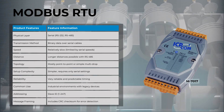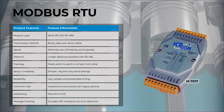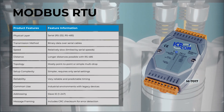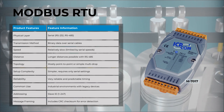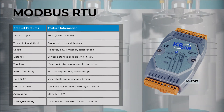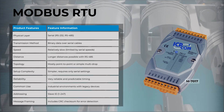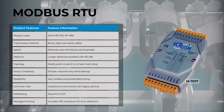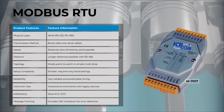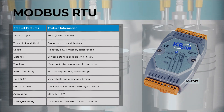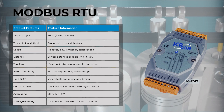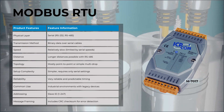The topology is mostly point-to-point or simple multi-drop setup. Complexity is simpler, requiring only serial settings. RTU is very reliable with predictable timing, and its common uses are industrial environments with legacy devices. It addresses slave IDs from 1 to 247, and message framing includes a CRC checksum for error detection.